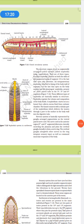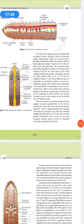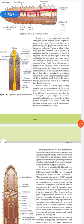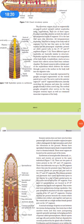Now coming to the excretory organs, which occur as segmentally arranged coiled tubules called nephridia. There are three types: septal nephridia present on both the sides of the intersegmental septa of segment 15 to the last that opens into the intestine. Then integumentary nephridia, which is attached to the lining of the body wall in segments three to last that opens to the body surface. And then pharyngeal nephridia, which is present in three paired tubes in fourth, fifth and sixth segment. These different types of nephridia are basically similar in structure. Nephridia regulate the volume and composition of the body fluids. A nephridia starts out as funnel that collects excess fluid from a coelomic chamber. The funnel connects with the tubular part of nephridia, which delivers the waste through the pore to the surface of the body wall or into the digestive tube.